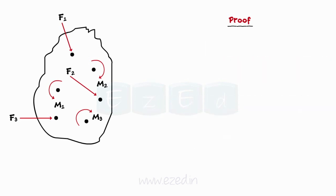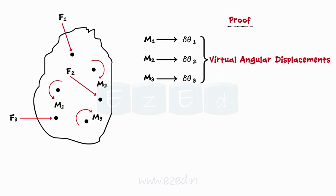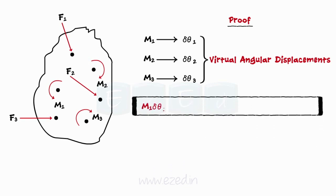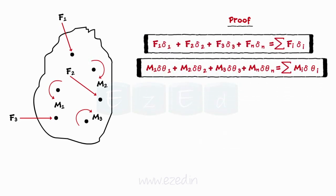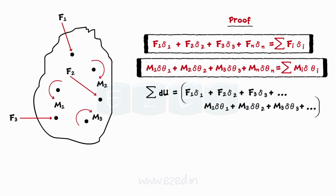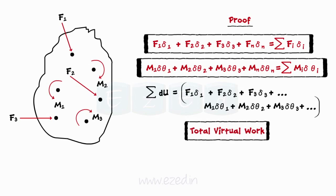Again, the couple moments M1, M2, M3 will have angular displacements δθ1, δθ2, δθ3 respectively. These displacements are known as virtual angular displacements. The work done due to these moments is given by the summation of the product of the magnitude of a couple moment and its virtual angular displacement. Hence, the total work done due to linear forces and couple moments is given by summation dU, which equals the summation of forces times virtual linear displacements plus couple moments times virtual angular displacements. This is the total virtual work done due to all the forces and the couples.